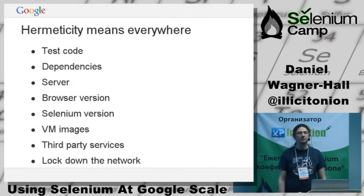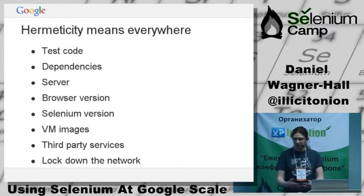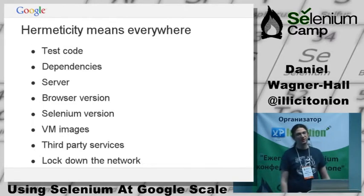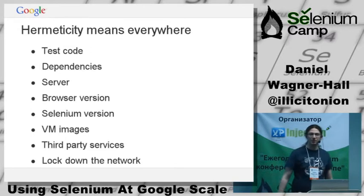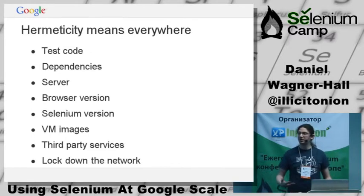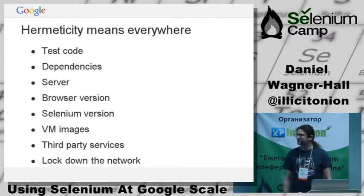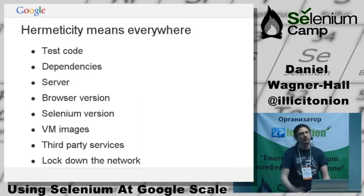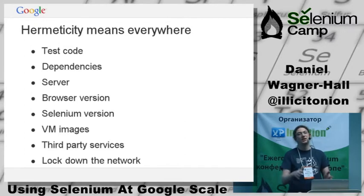The singleton pattern in programming is a really bad pattern because it's global state — anything can change it. Having VM images that change independently of test code is exactly the same problem. If every single change you make is committed into your source control, you can see that yesterday someone committed a change to the VM image and that's exactly when your test started failing. You can check out the revision before that change, verify the old image passed, and say: you broke my code, I can prove it.